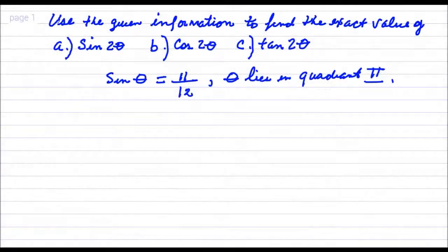Use the given information to find the exact value of sine 2 theta, cosine 2 theta, and tangent 2 theta. These are all double angle formulas that we are going to use. Here is the given information: the sine of the angle is 11 over 12 and that angle is in quadrant 2.